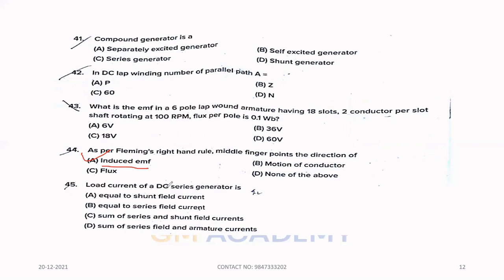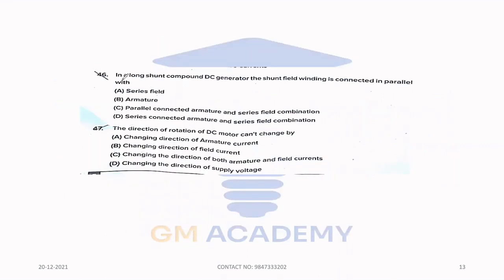Forty-five. Load current of a DC series motor is. Option B, equals series field current. Forty-six. In a long shunt compound DC generator, the shunt field winding is connected in parallel with. Option D, Series connected armature and series field combination. Option D is the correct answer.